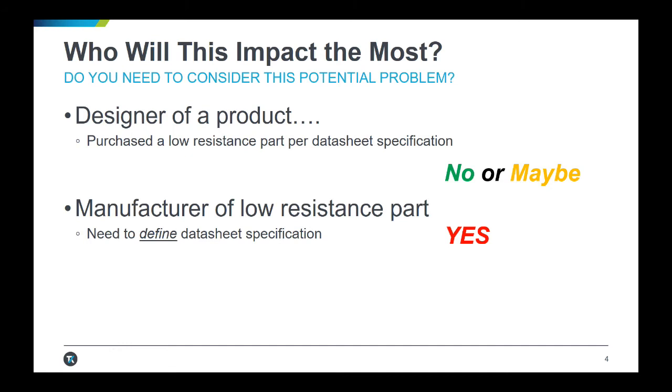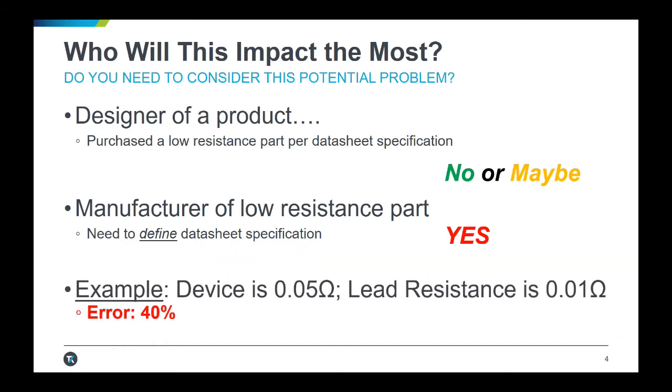If you manufacture low resistance devices and need to guarantee that they meet the specifications you will be providing to potential customers, then obtaining the most accurate measurement of your device is imperative. Consider the situation where you are making 50 milliohm resistors and your test setup uses leads that are 10 milliohms each. This has the potential to result in 40 percent error in what you are measuring.